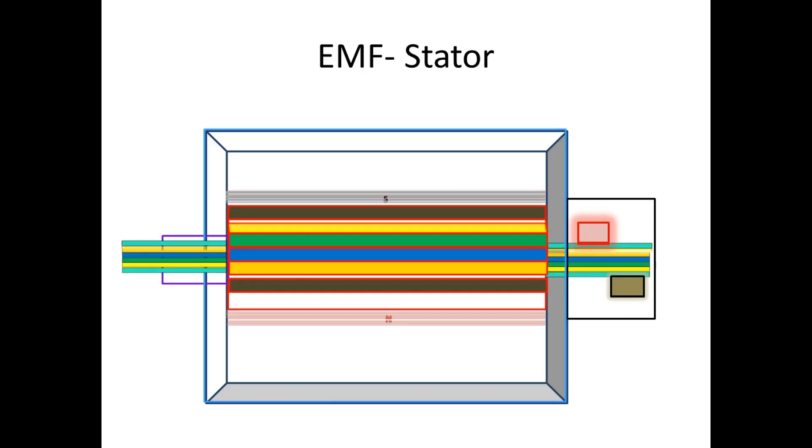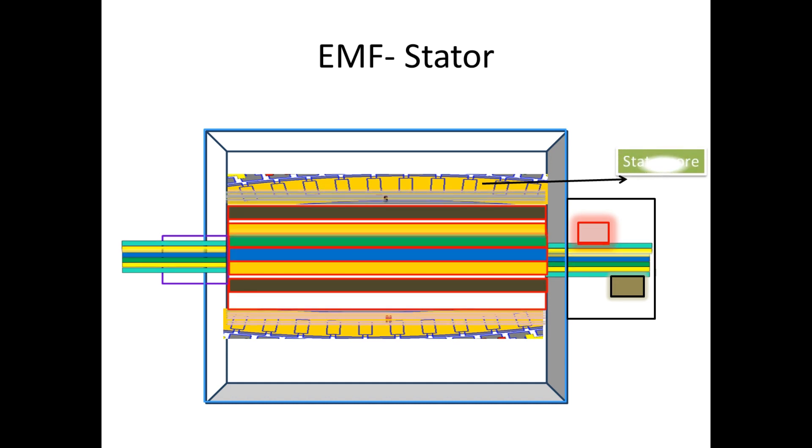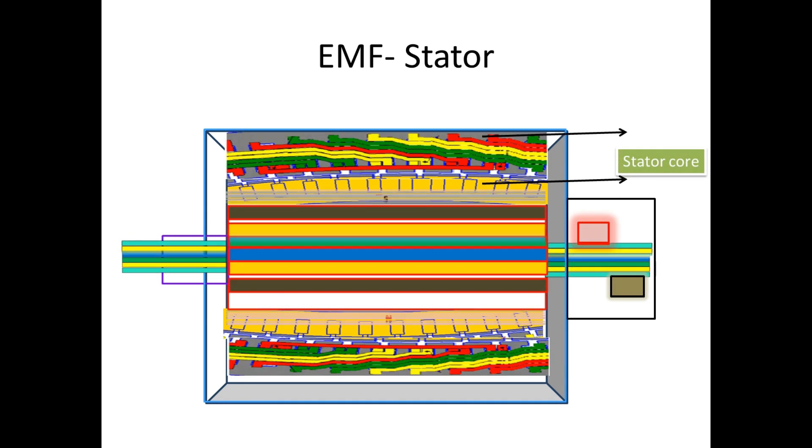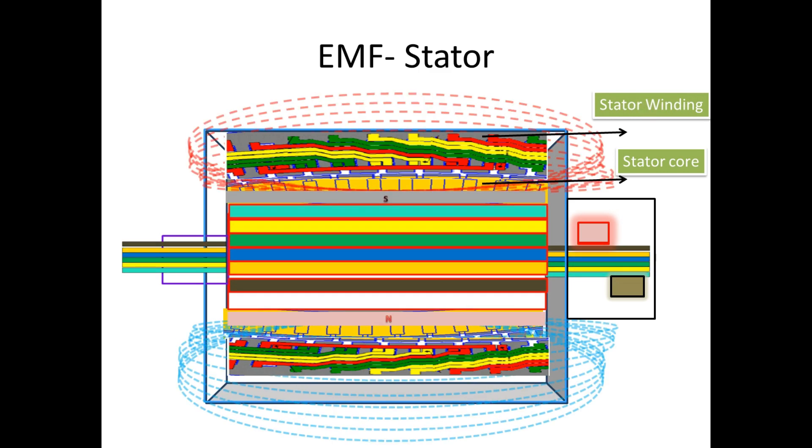Stator and rotor are very near to each other, and the stator also has a core. Over this core, the stator winding is wound. Now the magnetic field from the rotor gets into the stator core.